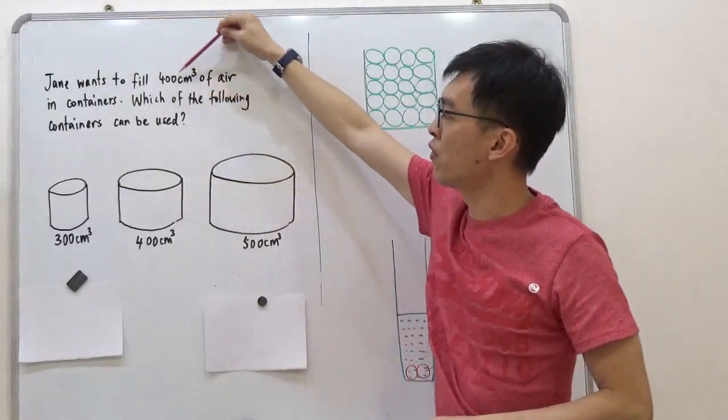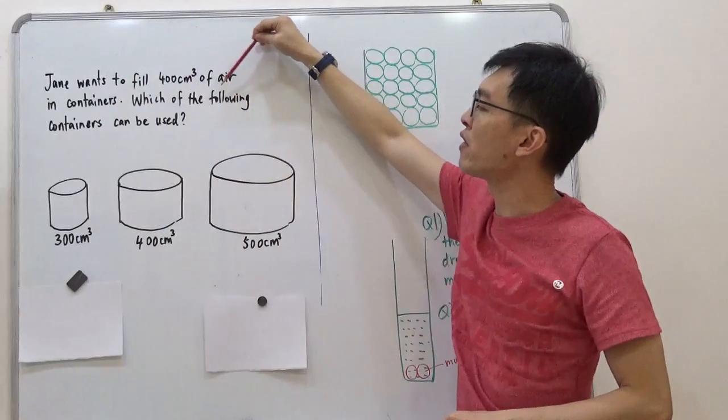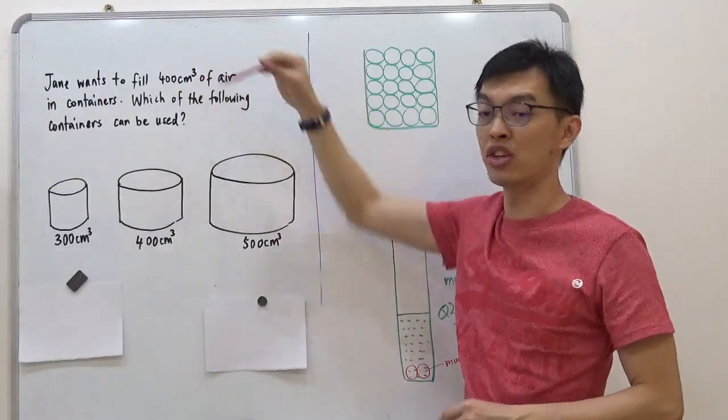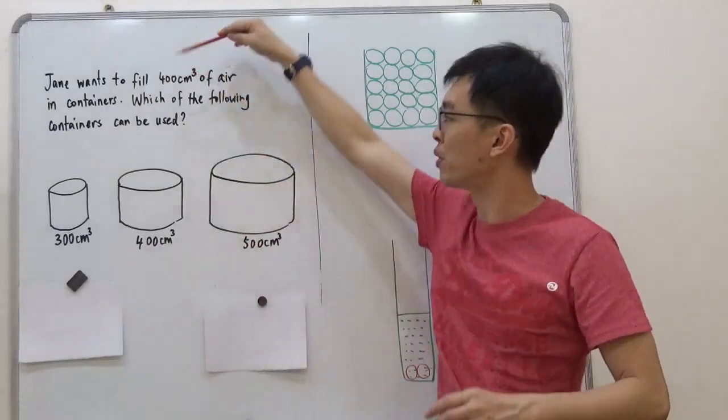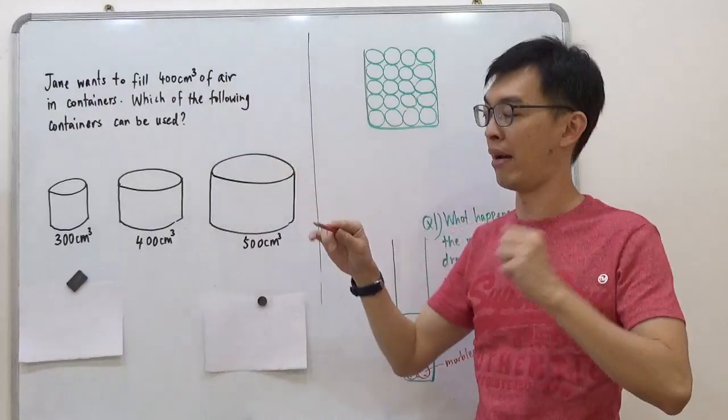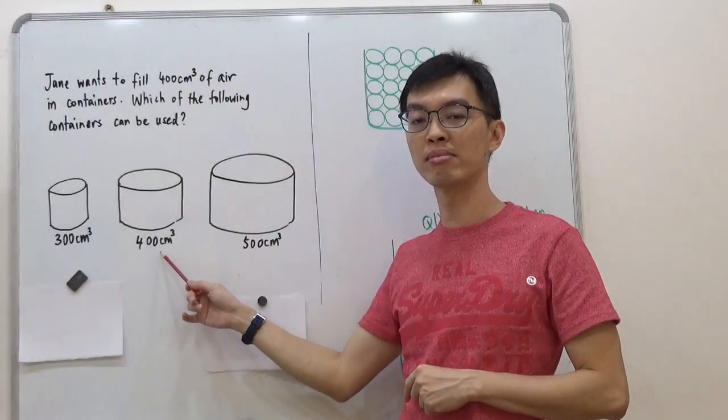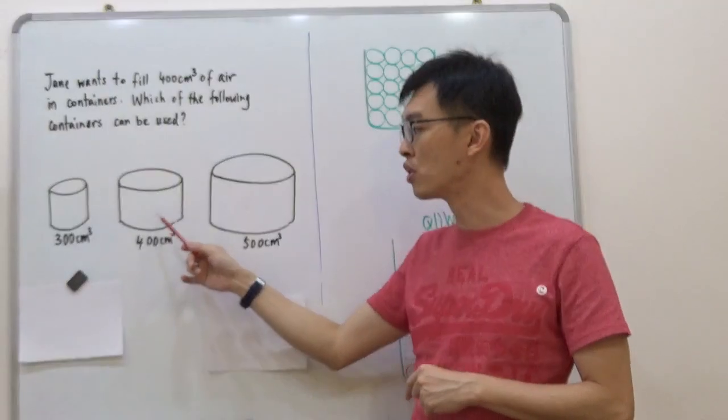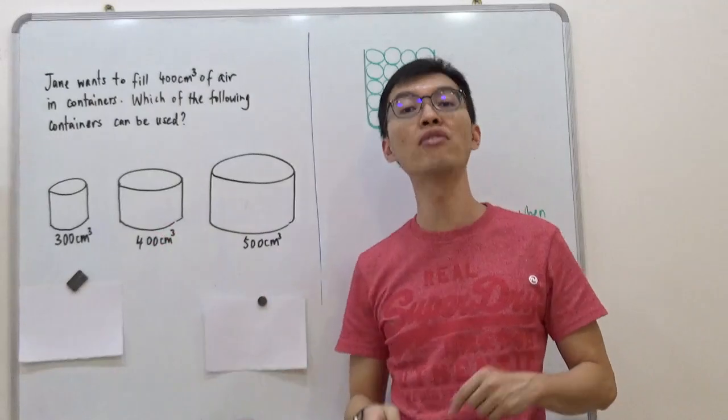Jane wants to fill 400 cm³ of air in containers. Which of the following containers can be used? We need to select which containers can hold 400 cm³ of air. A lot of people say, is it this one, this one? Yes, definitely. You know that you can put 400 cm³ of air into a 400 cm³ container.